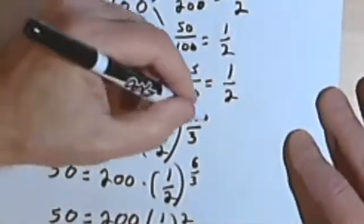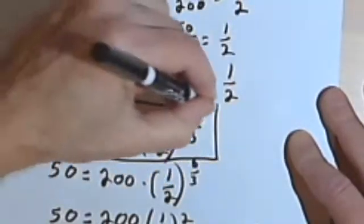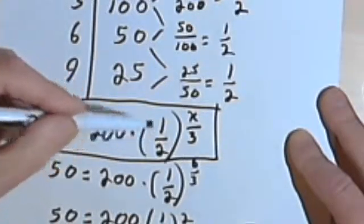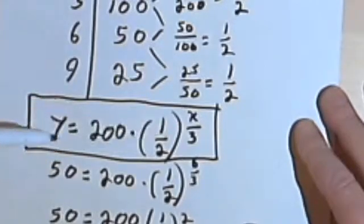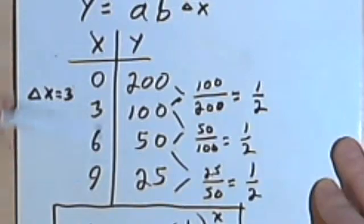So this equation, y equals 200 times one-half raised to the x over 3, will be the specific formula, the specific equation for this table of values.